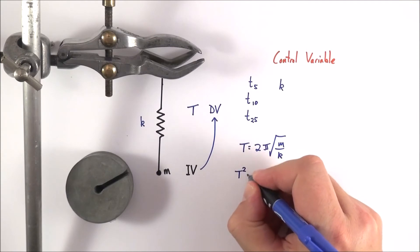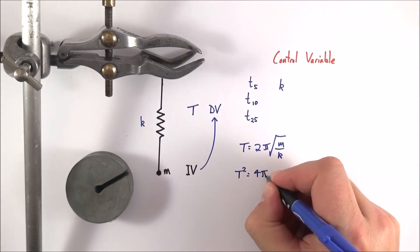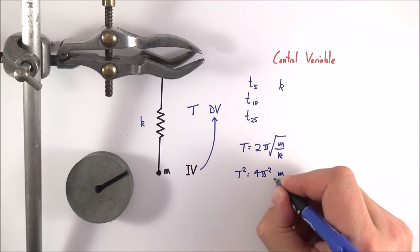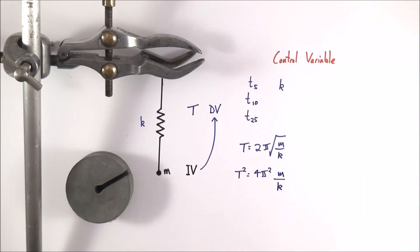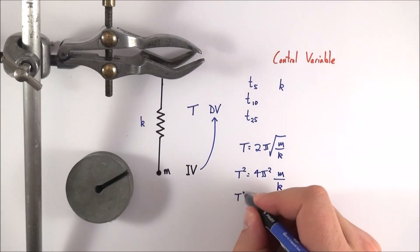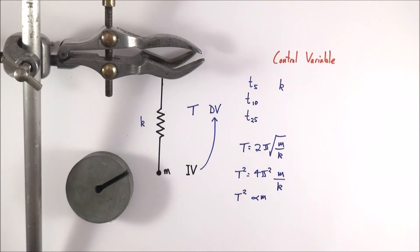we could say that t squared is equal to 4π squared m over k. So I've just squared both sides and that means then that theoretically t squared should be proportional to m because all of these other things here are exactly the same.